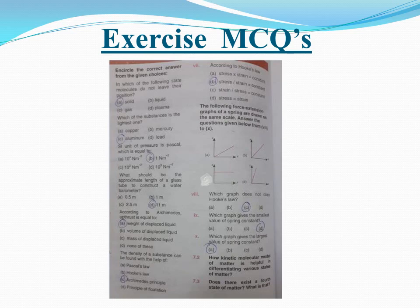Multiple choice questions: First question — in which state do molecules not leave their positions? The answer is solid state, because in solid state molecules are closely packed and do not leave their positions. Second question — which substance is lightest: copper, mercury, aluminium, or lead? Obviously aluminium is the lightest. Next — the SI unit of pressure is pascal, which equals 1 newton per meter squared.